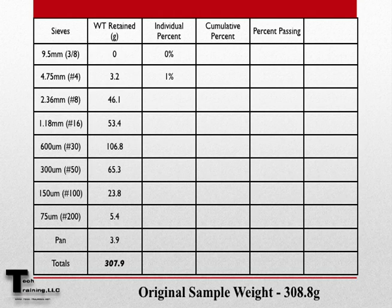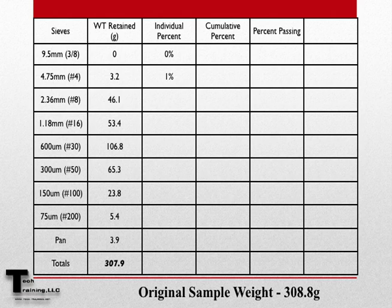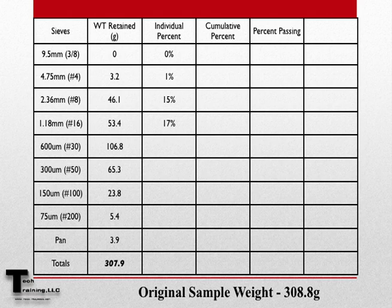We can now calculate the individual percent retained on each sieve. On the first sieve, the 9.5mm, there was no material retained, so the individual percent retained is 0. On the second sieve, the 4.75mm, there were 3.2 grams of material retained. We take the 3.2 grams and divide it by the original sample weight of 308.8 grams, then multiply by 100 to get 1% retained on the 4.75mm sieve. We can now fill in the remaining percentages and move on to cumulative percent retained.